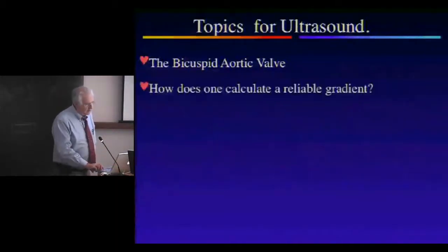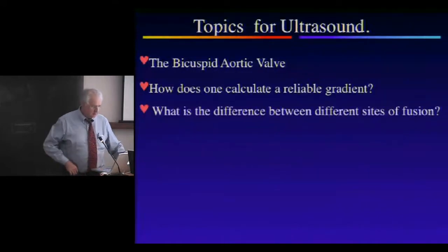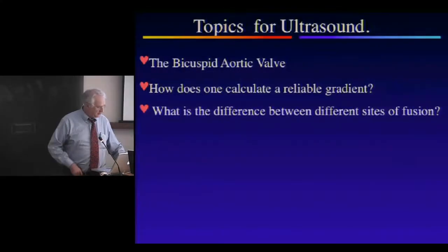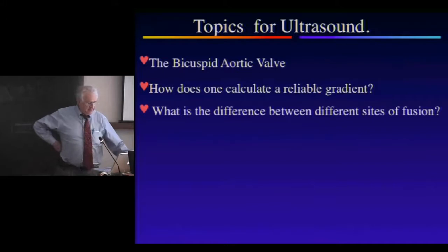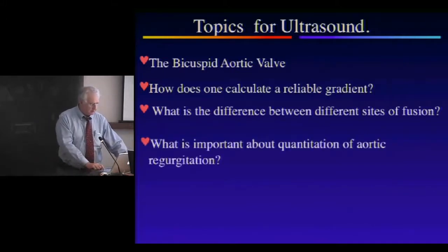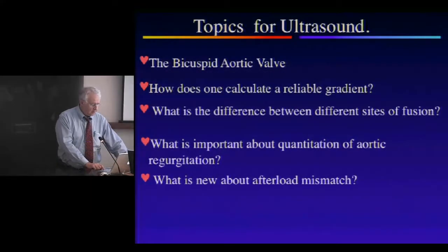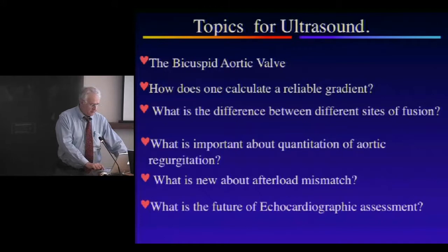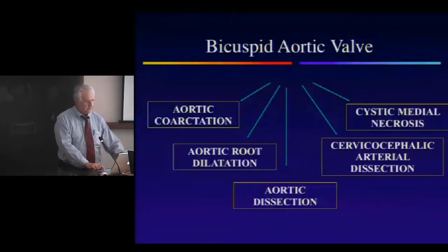We're going to talk about the bicuspid aortic valve, how we calculate a reliable gradient — although after the last session I'm not sure we can do anything accurately anymore — and the differences between the sites of fusion, what's important about quantitation of aortic regurgitation, what's new about afterload mismatch, and the future of echocardiographic assessment.